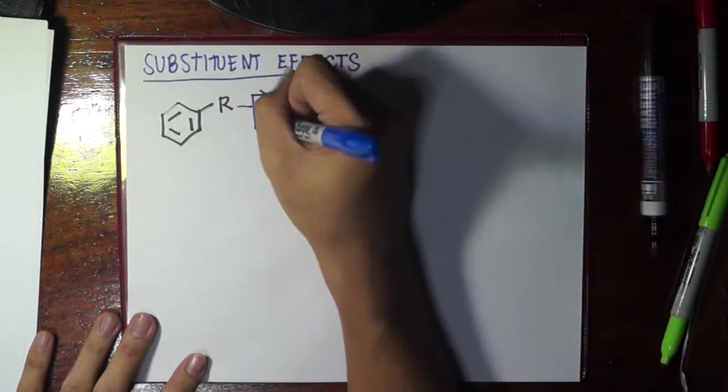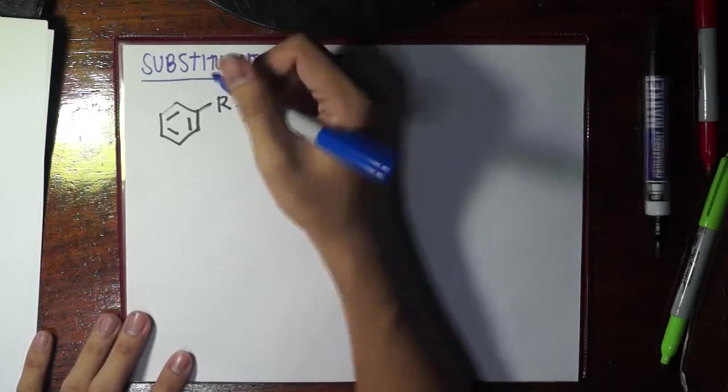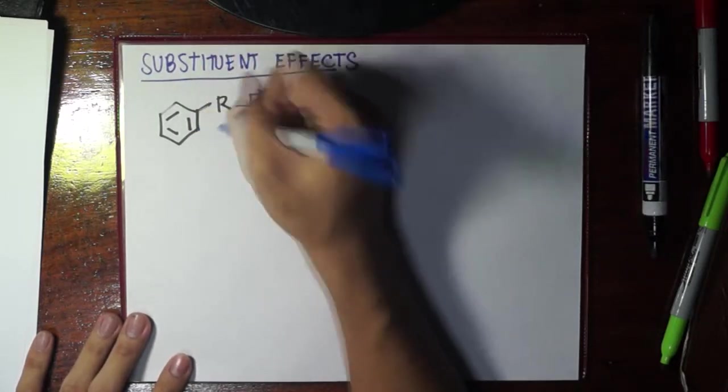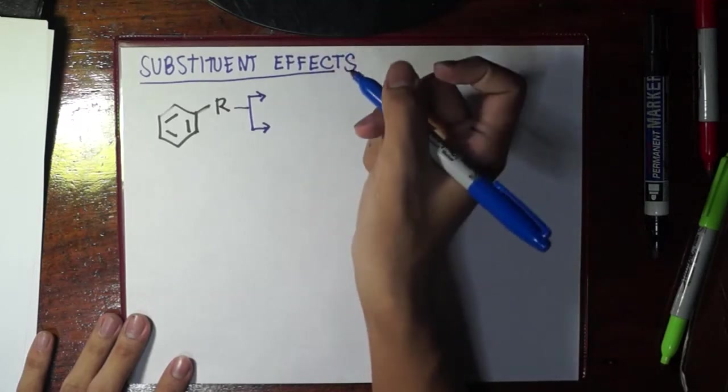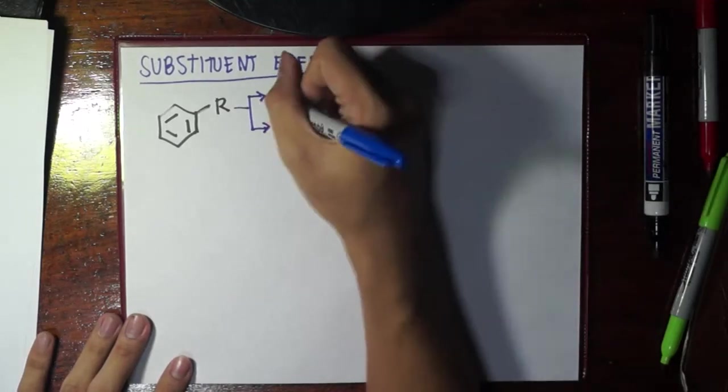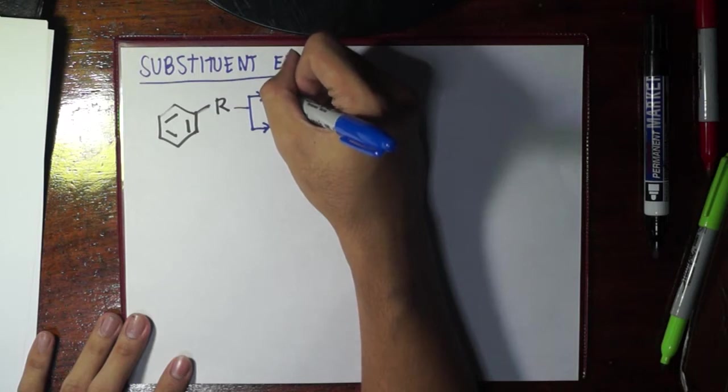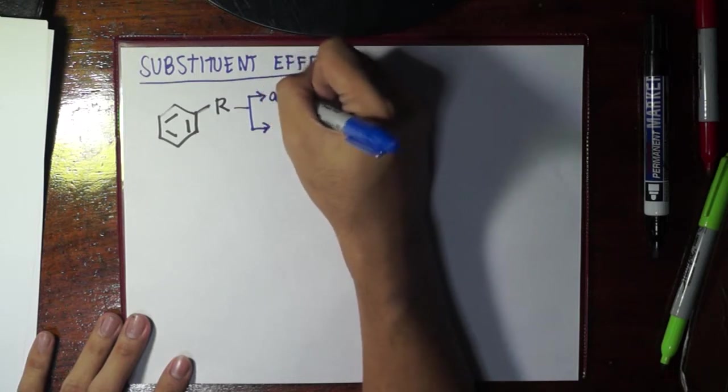For example, if you want to add a certain substituent X, the R will dictate two factors that will influence X. First is the activity of the ring.